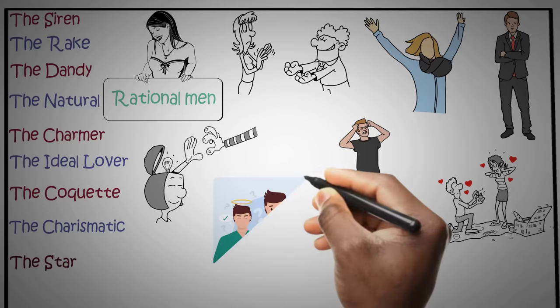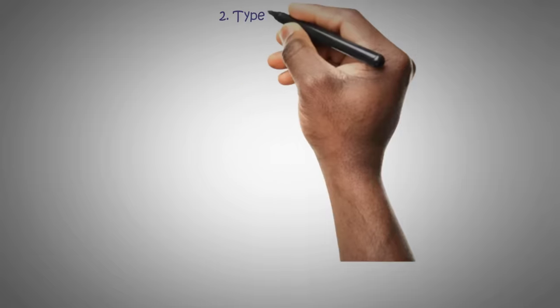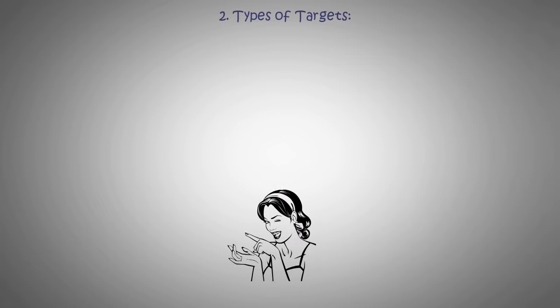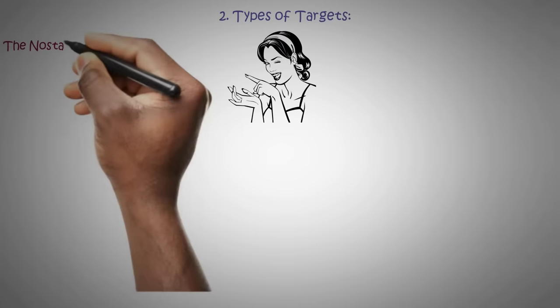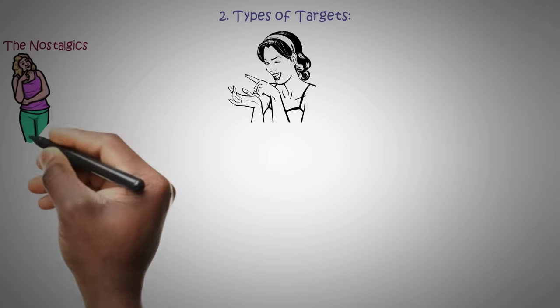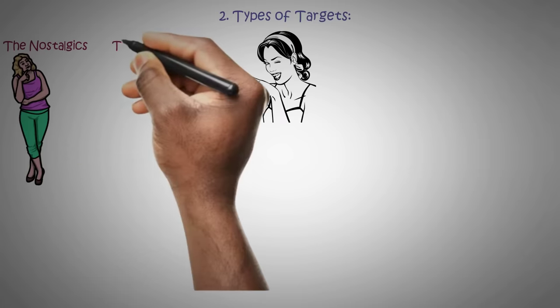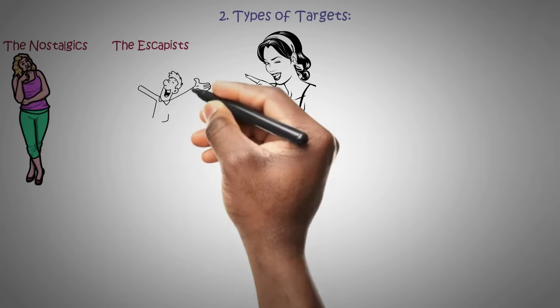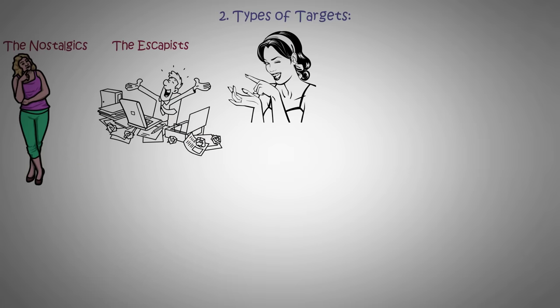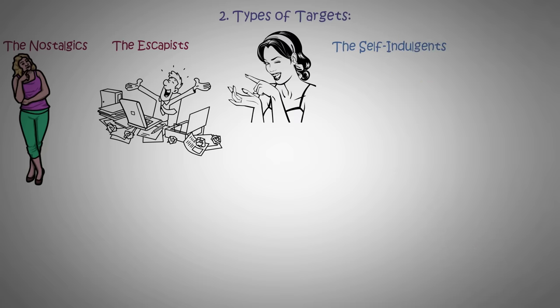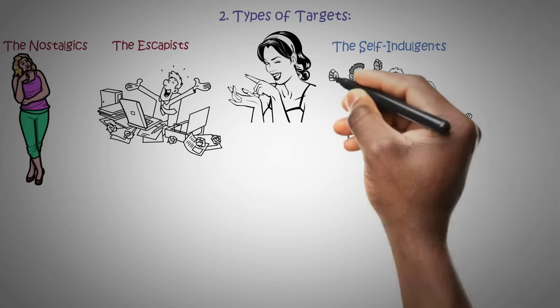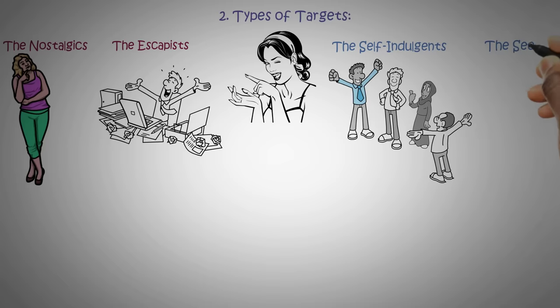Two types of targets: Know your target, fill their void, and seduce them. The Nostalgics: people who long for their past glory days. The Escapists: those itching to break free from their roles. The Self-Indulgent: people who want their quirks appreciated. The Seekers: those looking for a specific fantasy.